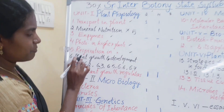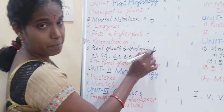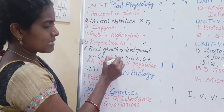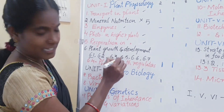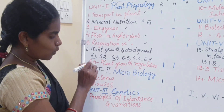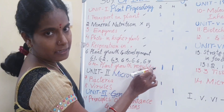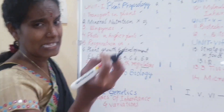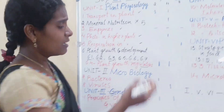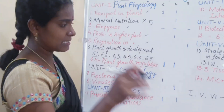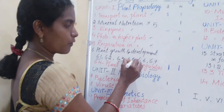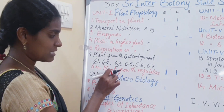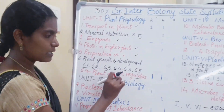Coming to the sixth chapter, Plant Growth and Development: sections 6.1, 6.2, and 6.3 are deleted. Section 6.4, Plant Growth Regulators — that is, phytohormones including auxins, cytokinins, gibberellins, and abscisic acid — these concepts are retained as it is. Sections 6.5, 6.6, and 6.7 are also deleted. So from this chapter, only Plant Growth Regulators remains.